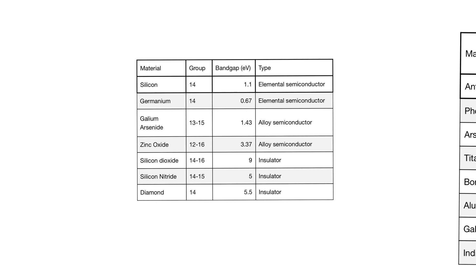If we look at the band gap values for silicon, germanium, gallium arsenide, and zinc oxide, we are generally talking about band gap values between 0.5 electron volt and under 4 electron volt.